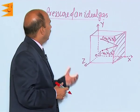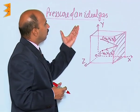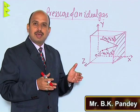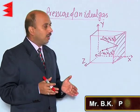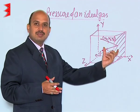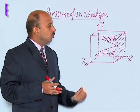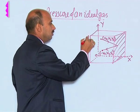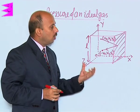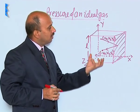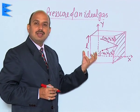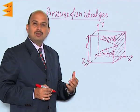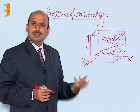Now, see how we have to calculate pressure of an ideal gas. Suppose you take an ideal gas in a container. I have taken here a cubical vessel whose side is suppose L — the length of each side is L. This vessel has ideal gas inside it. As we know, gaseous molecules are in random motion in all directions.